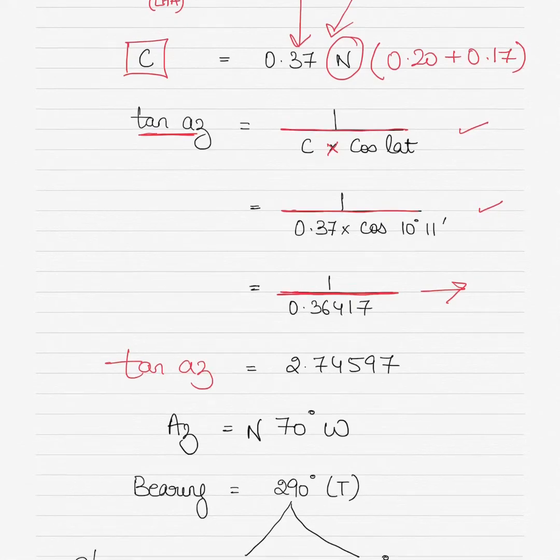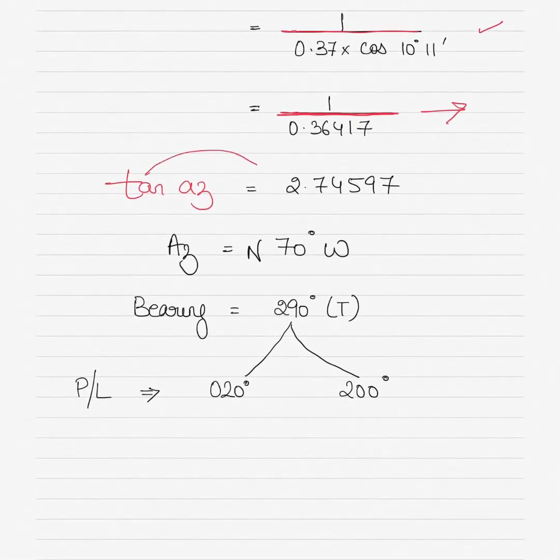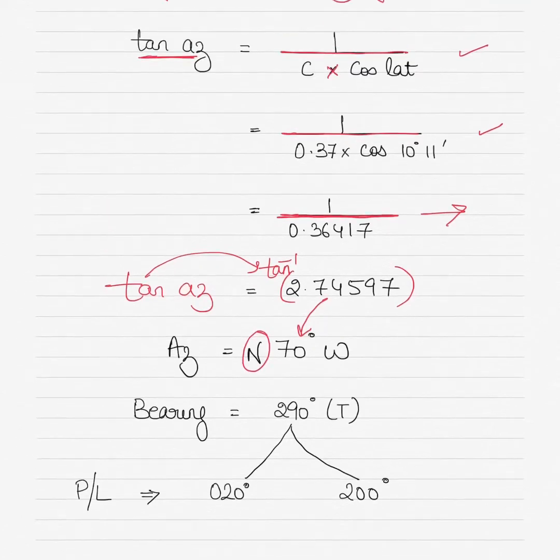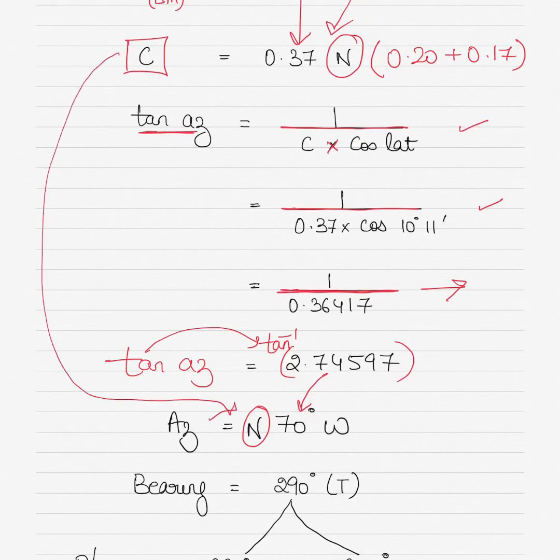2.74597. Take tan to the other side, make it tan inverse of this value. Tan inverse gives you a value of 70 degrees, but I've written north and west next to it. North comes from name of C, which is north.